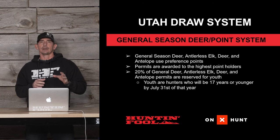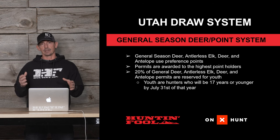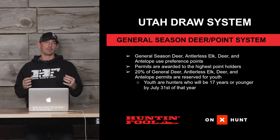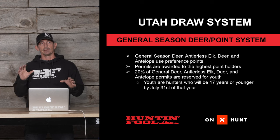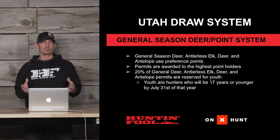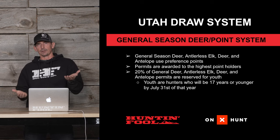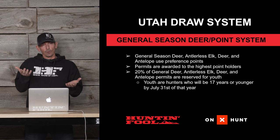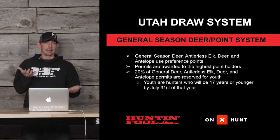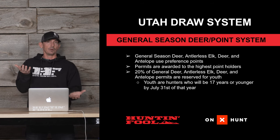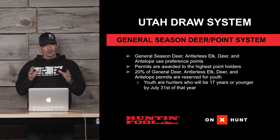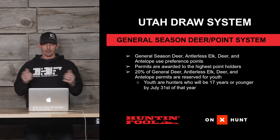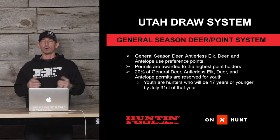A nice thing about general season permits and antlerless permits: 20% of those come right off the top and are reserved for youth. For Utah residents this isn't as big a deal since there are many youth applicants, so the point drop for youth tags isn't as large. But for non-residents, there's a pretty big drop — a hunt that takes four or five points for adults might draw at one point or zero points for youth. Utah considers youth as hunters who will be 17 or younger by July 31st of that year.